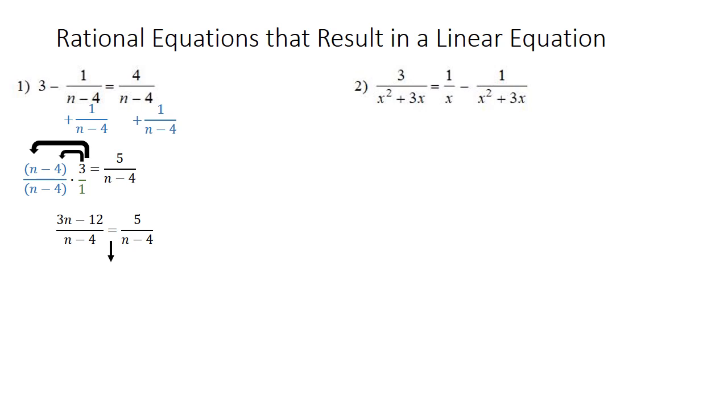Once you've gotten both sides of the equation over the same denominator, you can just bring the problem down and leave the denominators out. So we're going to bring down the 3n minus 12 on the left hand side and the 5 on the right hand side. So we get 3n minus 12 equals 5.